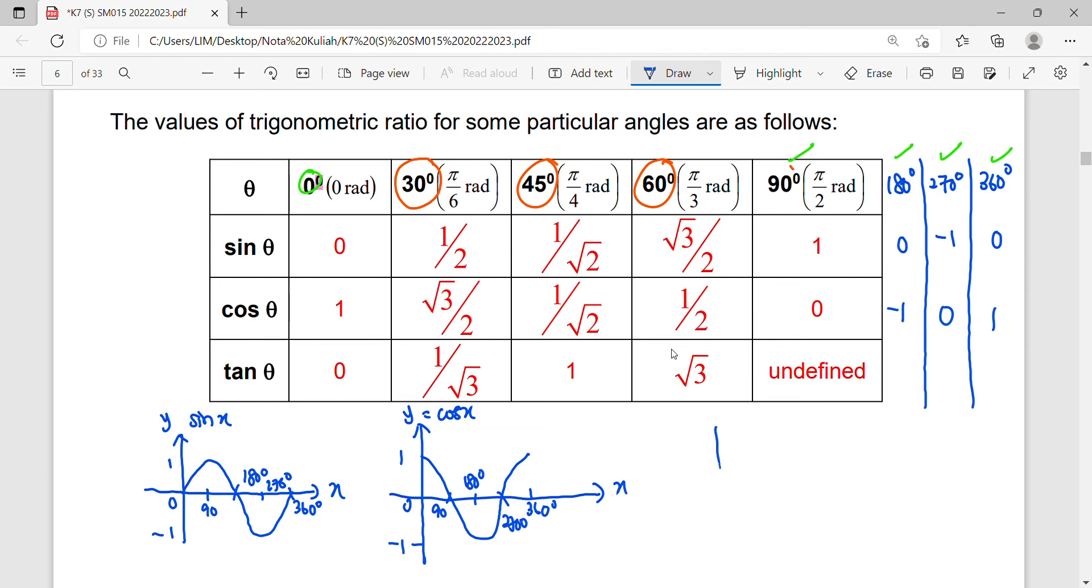For the last trigonometry function, tangent, it won't have any maximum or minimum value because the graph will be going up together with its asymptote. Then at 90 degrees, the pattern repeats. The period of tangent occurs at 180 only.